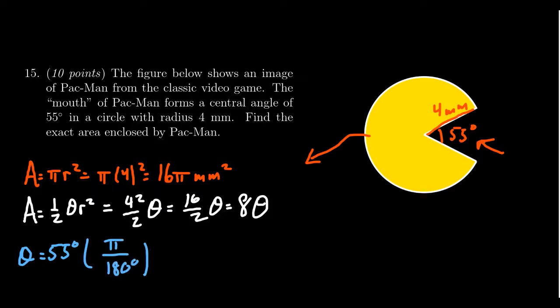55 and 180 do have a common factor of five. 55 is five times 11, so you get 11 pi on top, and 180 is five times 36. In terms of radian measure, 55 degrees is equivalent to 11 pi over 36.